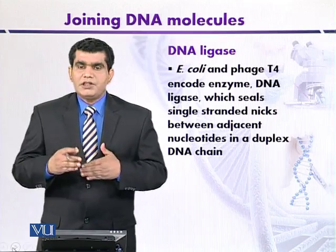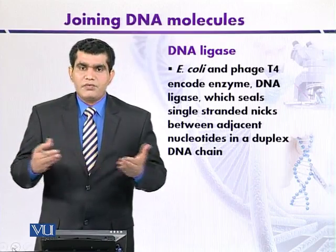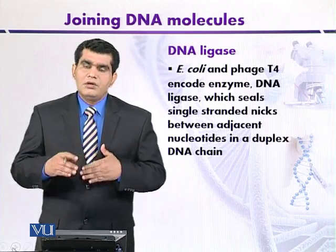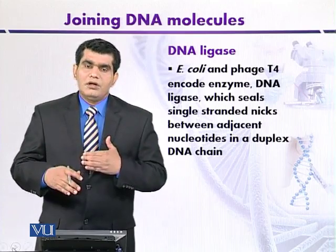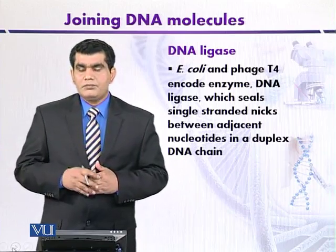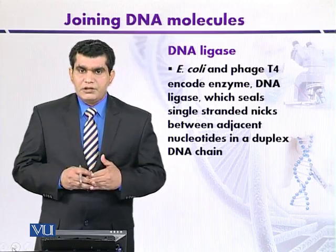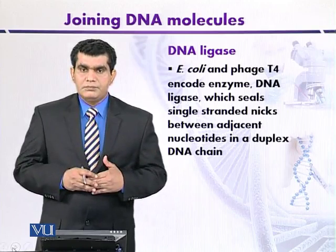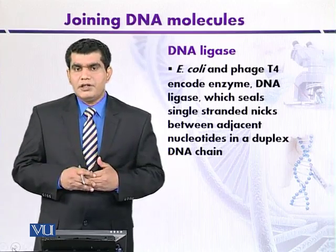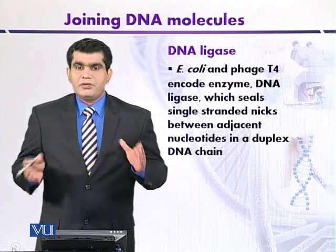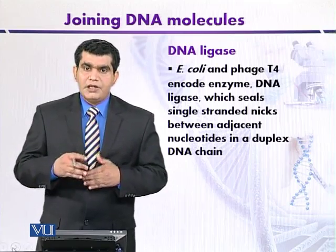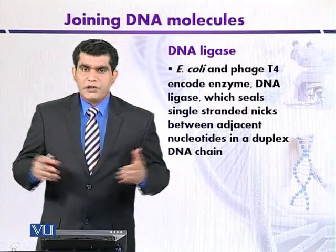In both cases — whether it is E. coli DNA ligase or T4 phage DNA ligase — both catalyze the formation of phosphodiester bonds. However, their cofactor requirements are different. T4 DNA ligase requires ATP, while the bacterial E. coli DNA ligase requires NAD+ (nicotinamide adenine dinucleotide). Both cofactors are hydrolyzed upon interacting with DNA ligase, and an AMP-enzyme complex is formed, which is then used to form the phosphodiester bonds.